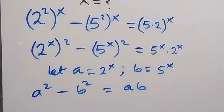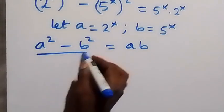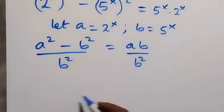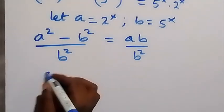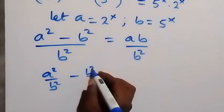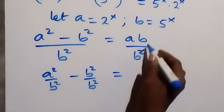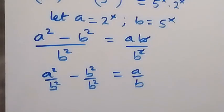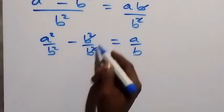In the next step, let's divide both sides by b squared. When we separate this, we can write it as a squared over b squared, minus b squared over b squared, which equals — one of the b's here cancels the other — we are left with a over b. Then b squared over b squared cancels to leave one.